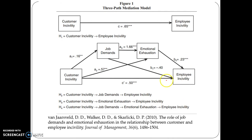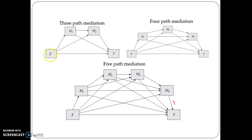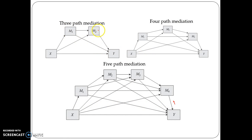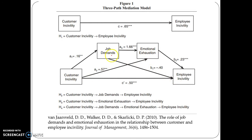This is an example paper published in the Journal of Management in 2010. Their model examines how customer incivility affects employee incivility through job demands and emotional exertion. This represents exactly the three-path mediation model. Here X is customer incivility, Y is employee incivility, M1 is job demand, and M2 is emotional exertion, giving three paths: customer incivility to job demand, job demand to emotional exertion, and emotional exertion to employee incivility.